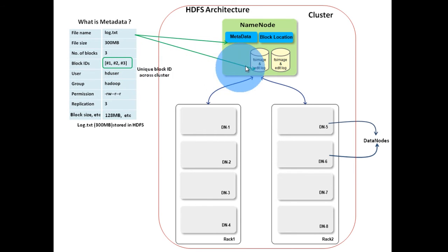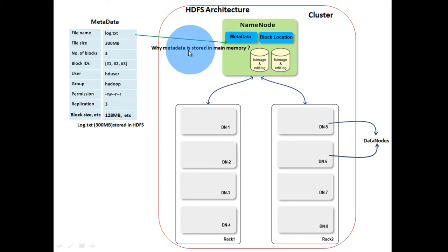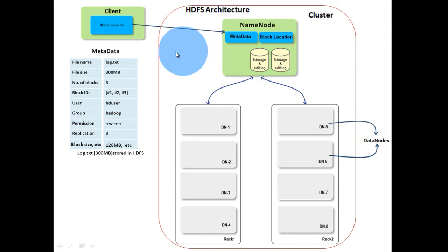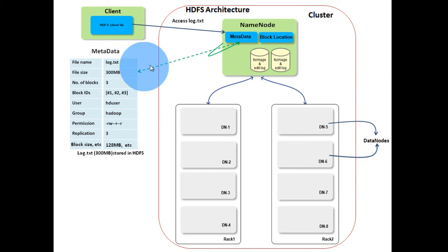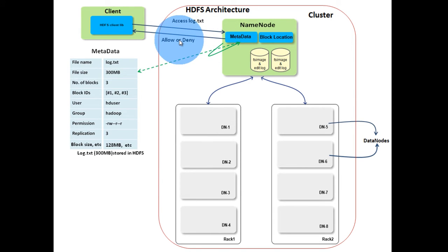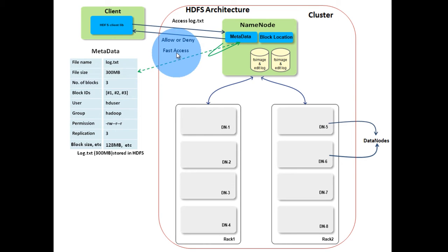This metadata is stored on hard disk as well as in main memory. Why is metadata stored in main memory? Metadata in main memory is used to serve client requests. If a client wants to access the log.txt file, then the client should contact the name node. Name node will look for this file's metadata in its main memory and then serve the client accordingly. It may allow or deny access based on file permission. So for fast access of data in HDFS, in-memory metadata is used.